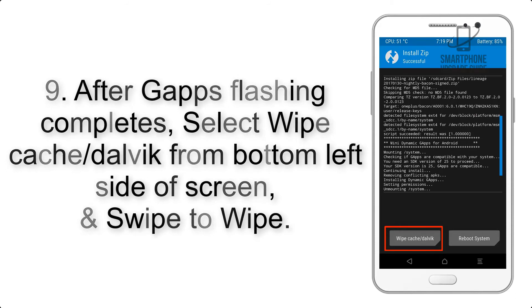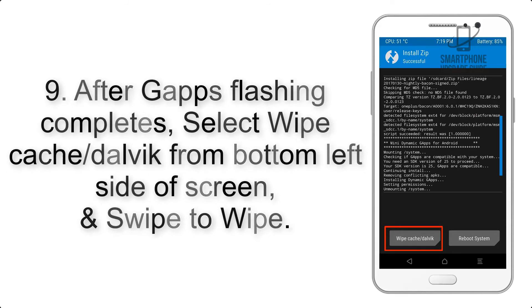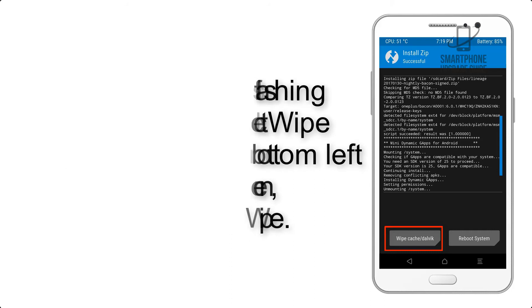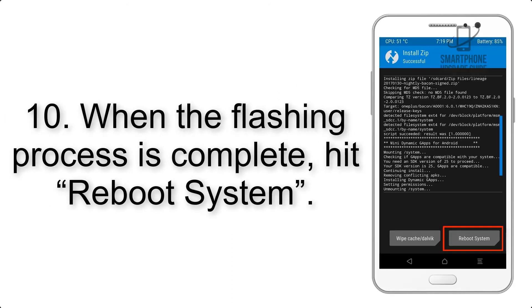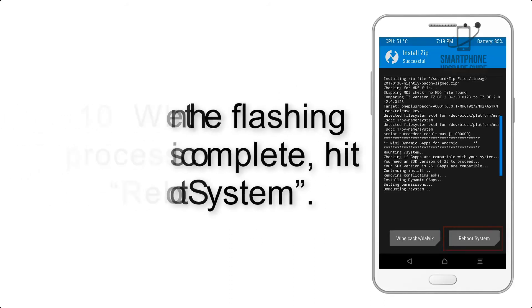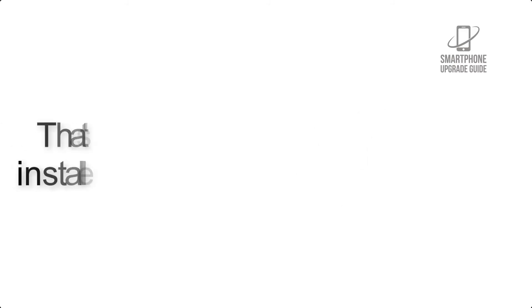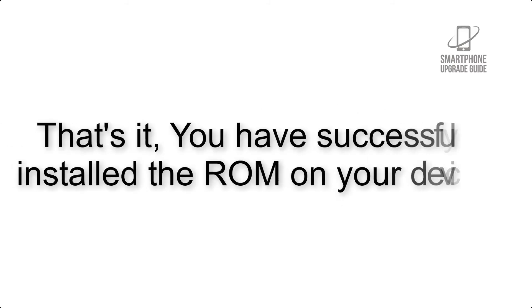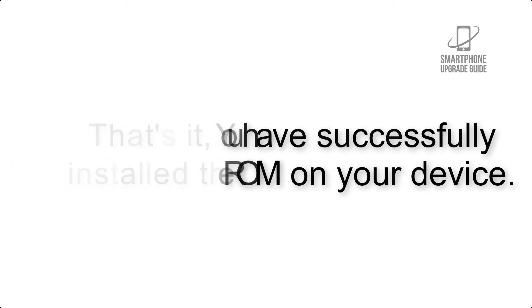Step 9: After gapps flashing completes, select Wipe Cache and Dalvik from the bottom left side of the screen and swipe to wipe. Step 10: When the flashing process is complete, hit Reboot System. That's it — you have successfully installed the ROM on your device.